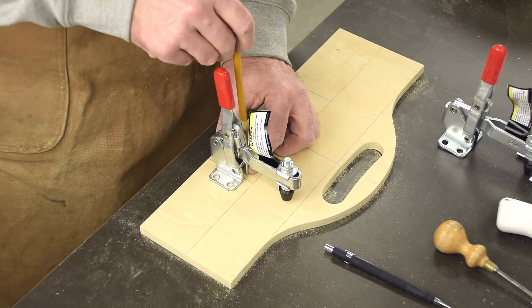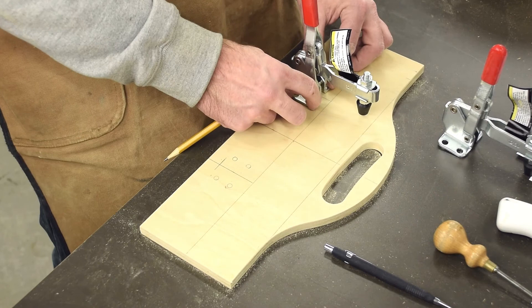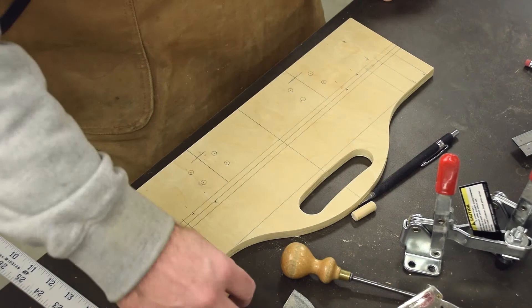To keep the workpiece securely in place, I prefer to use toggle clamps. You can get them fairly cheaply at Harbor Freight, especially when they issue their periodic coupons.